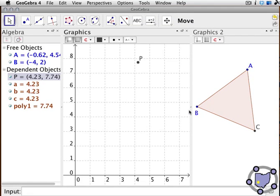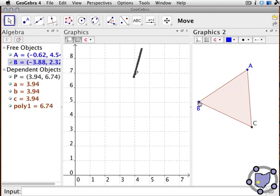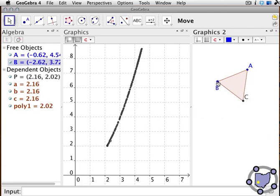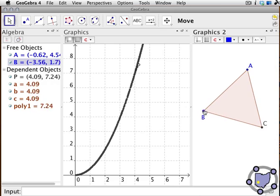Now when I drag point A or B, either one, notice what happens to the graph. We actually get a tracing of that point P. It's kind of interesting.